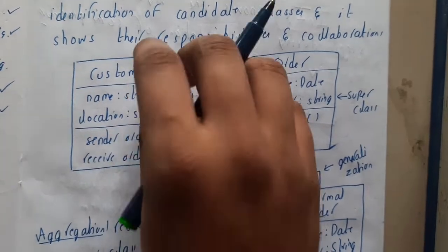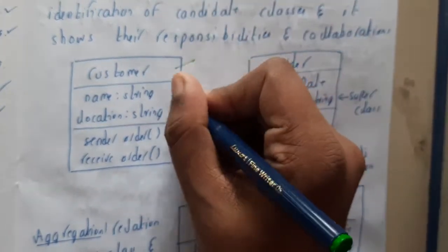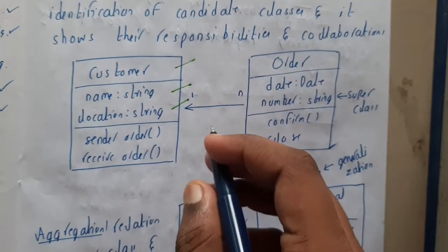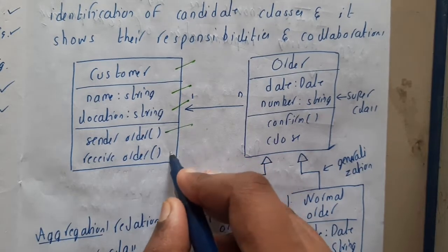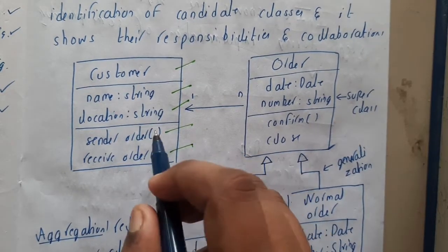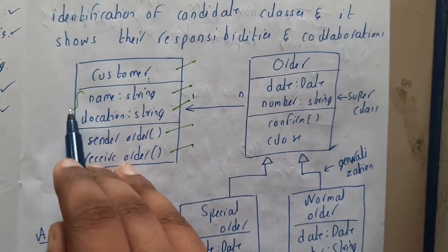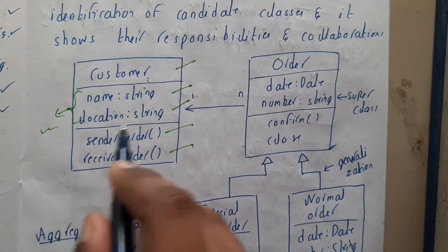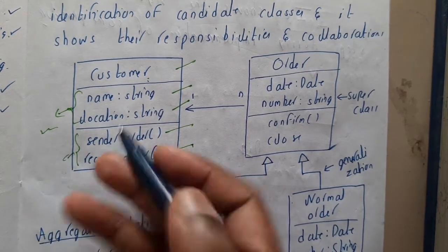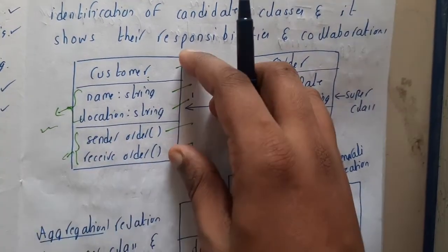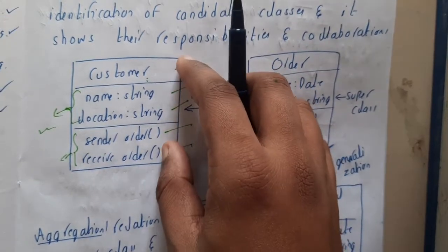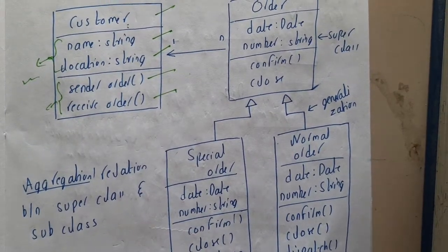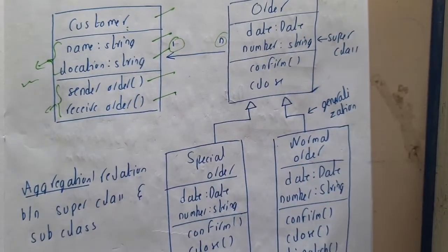For example, a customer ordering food — 'Customer' could be a class. Each customer will have a name, a location, and operations such as 'send order' and 'receive order'. The class name is Customer, the attributes are the variables, and send/receive order are the functions or methods. When you connect classes and write relationships between them, that is called a class diagram.